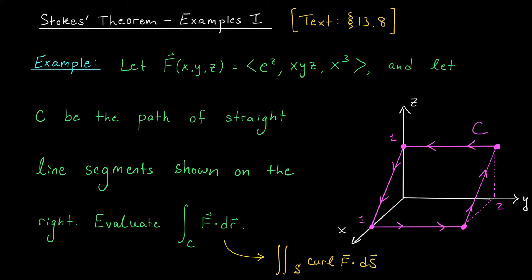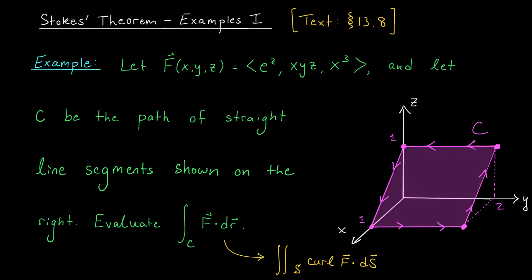Trading out four line integrals for one surface integral is going to save us a ton of time. I guess the next big question is, what's this surface S? Over which surface are we integrating? Well, according to Stokes' theorem, we have to integrate over a surface S whose boundary is this curve C. Now, there are lots of surfaces with this property, but let's keep it simple. We could just take S to be this plane right here. So this is going to be our surface S, and our strategy is to compute this surface integral.